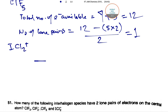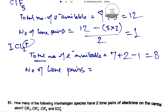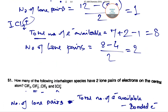In the case of ICl2⁺, the total number of electrons available equals 7 plus 2 minus 1 because of the positive charge, which equals 8. The number of lone pairs equals 8 minus 4 divided by 2, where 4 comes from 2 chlorine atoms giving 2 bonds times 2 electrons. This equals 2 lone pairs.